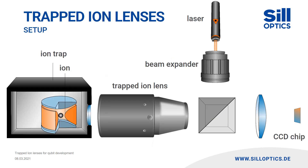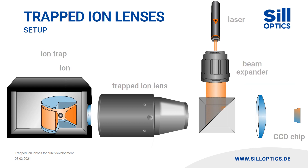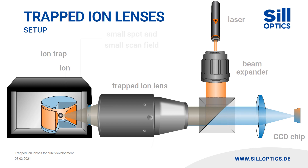Lenses are used to allow laser cooling and the modification of qubits. In addition, the trapped ion has to be imaged at a CCD sensor for process control. Therefore, trapped ion lenses are often color corrected for two wavelengths: the laser wavelength and the fluorescent observation wavelength. To hit the trapped ion, a very small focus on an also small scan field is necessary. Because of the small focus, these lenses have to be diffraction limited and they need a maximum NA.